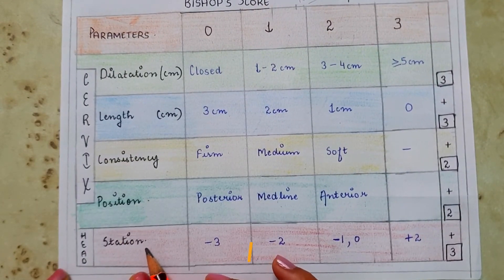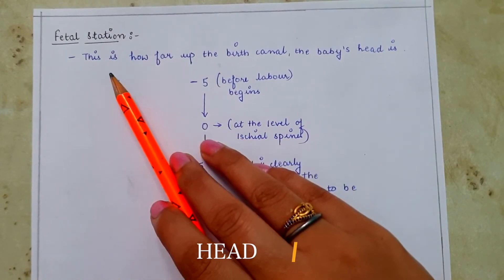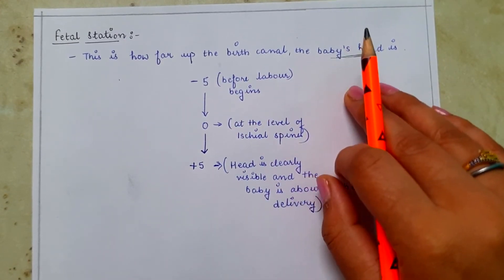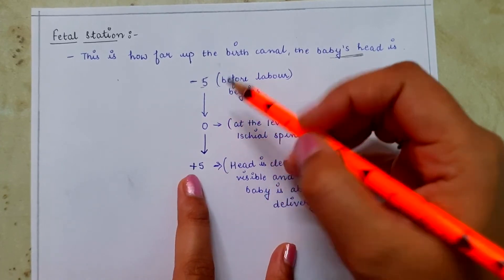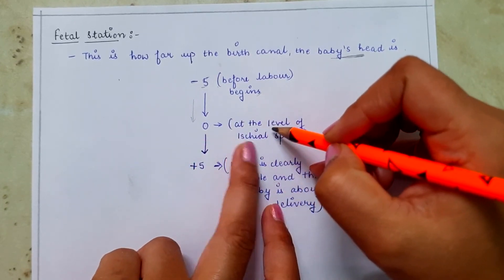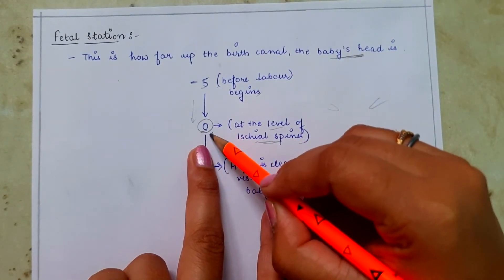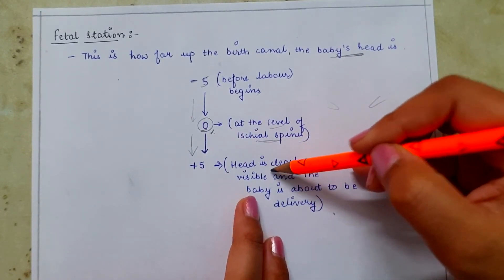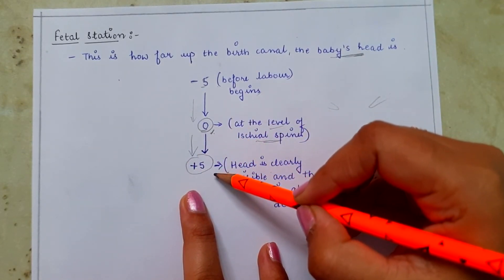The last parameter is the station of the fetal head, which assesses where the baby's head is in the birth canal. Before labor, the head lies at minus 5. When the fetal head is at the level of the ischial spines of the pelvis, it is zero station. When the head is clearly visible and delivery is imminent, the station is plus 5.